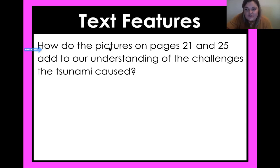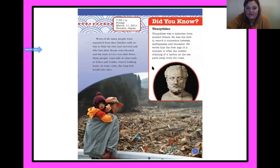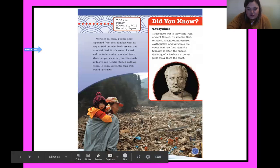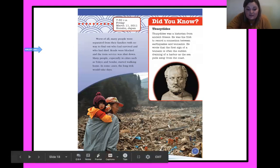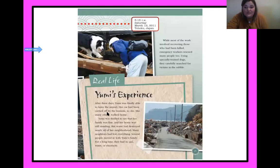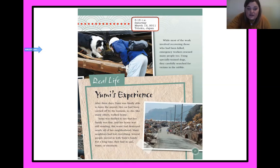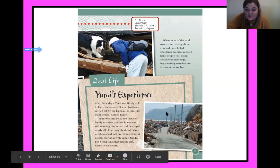Good job, fourth graders. Now let's look back at pages 21 and 25 and see how the pictures add to our understanding of the challenges the tsunami caused. The picture shows us the damage, all of the rubble — how destructive the tsunami was — and it shows sad people realizing what's happened to their town. On the other page, the pictures help us see the rescue and emergency workers helping people, and they show us the destruction as well.